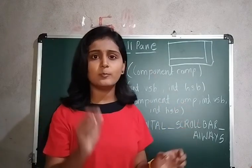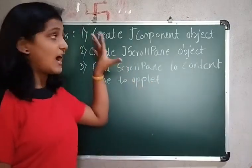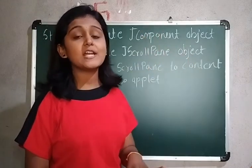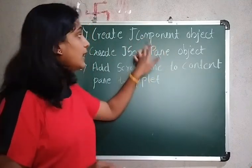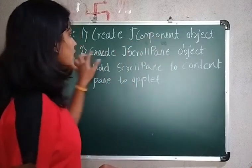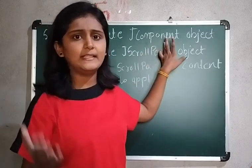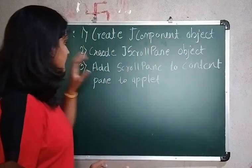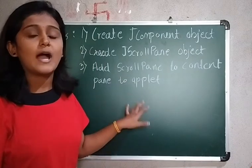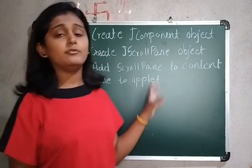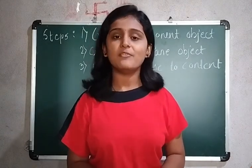For creating a ScrollPane you follow three steps. The first step is to create an object of JComponent. After creating the JComponent object, you create a JScrollPane object. After creating the ScrollPane object, whatever ScrollPane you have created should be added to the content pane of the applet. If you have any questions regarding this topic, you can mention them in the comment section. Thank you so much for watching this video.